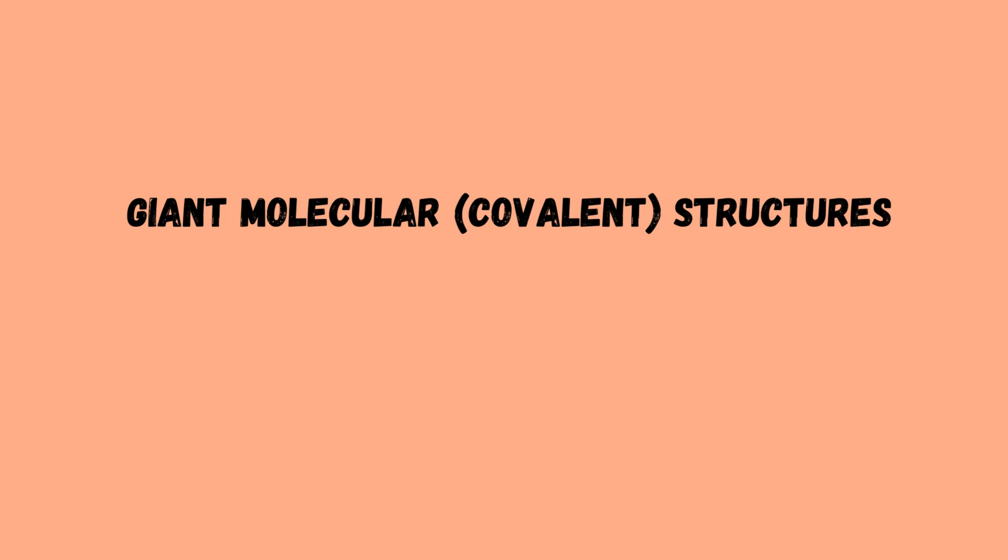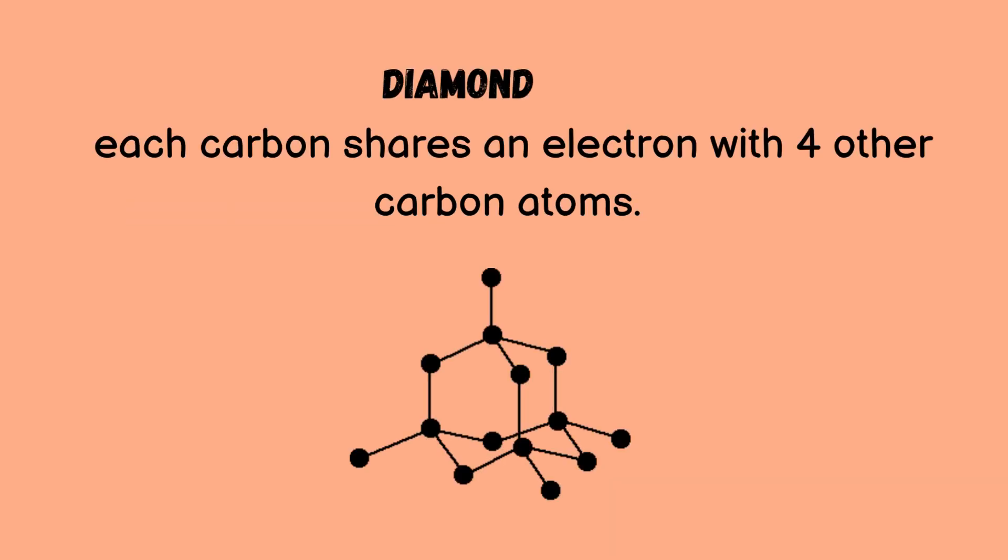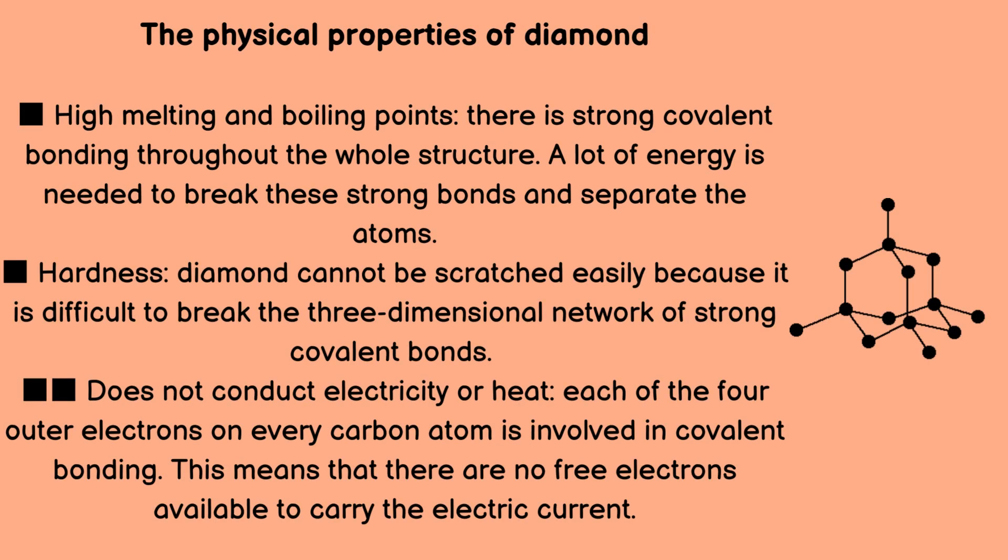The next giant molecular structure is diamond. Each carbon shares an electron with four other carbon atoms. The physical properties of diamond include high melting and boiling points, due to strong covalent bonding throughout the whole structure — a lot of energy is needed to break these strong bonds. Diamond cannot be scratched easily because it is difficult to break the three-dimensional network of strong covalent bonds.